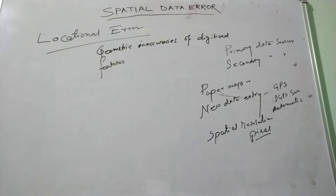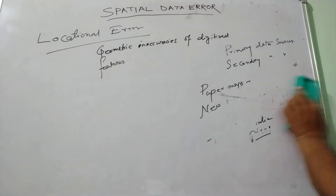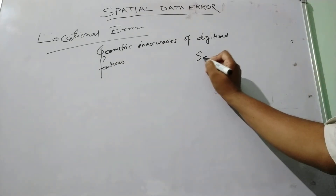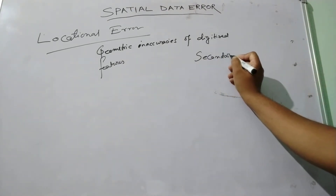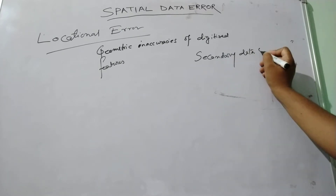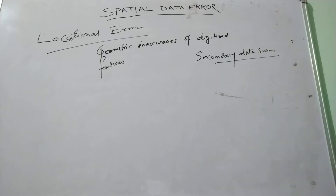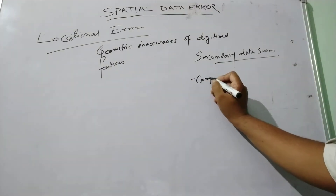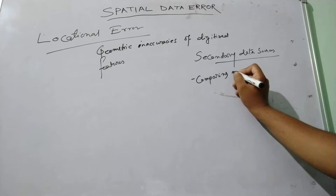Now coming to the secondary sources. This is an indirect methodology that employs the vast amount of current geospatial data during their accessibility. Like when we are comparing the digitized map and source map, they cannot be the same.